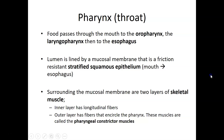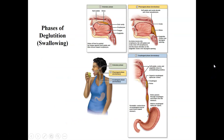Let's take a look at how swallowing happens. The technical term for this is deglutition, and it's broken down into three phases. The first phase is voluntary, happening in the oral cavity. The second and third phases are involuntary — once you start, it happens automatically. The second phase is the pharyngeal phase happening in the pharynx, and the third phase is the esophageal phase happening in the esophagus.